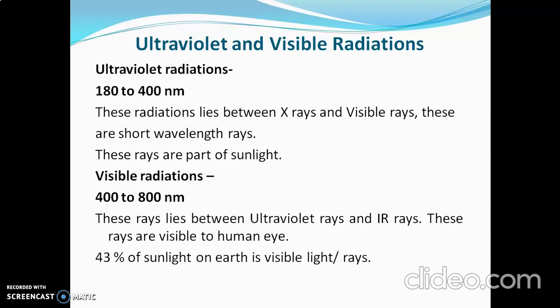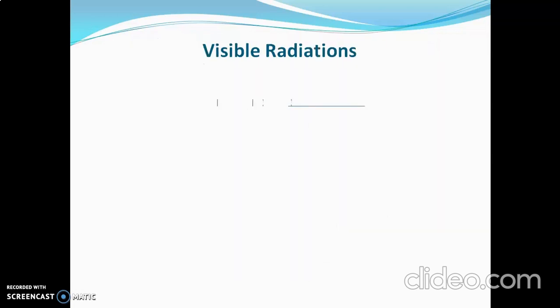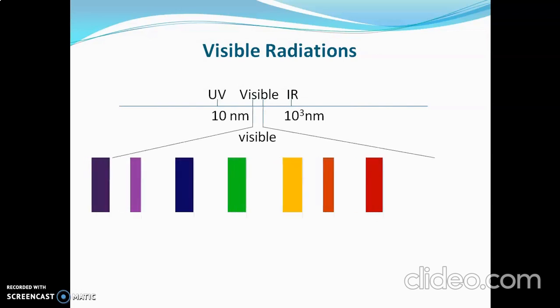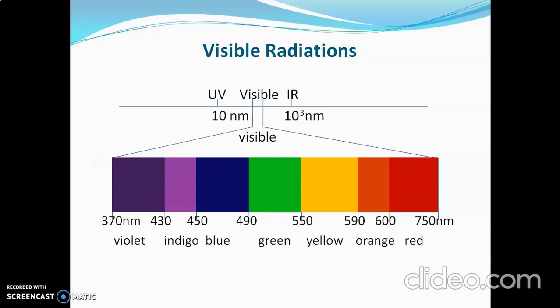43 percent of sunlight on Earth is visible light. Visible radiations have longer wavelength than ultraviolet radiations and they have less energy than UV rays. When we pass visible radiations or sunlight through a prism, we get seven different colors — that is, a rainbow.